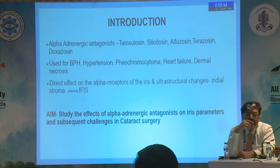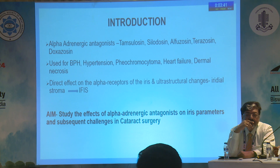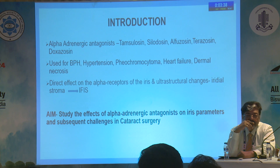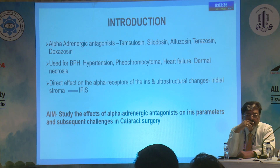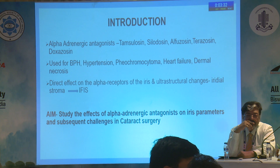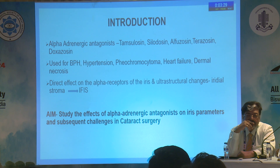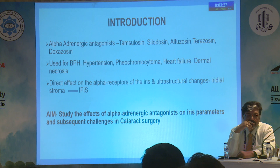Just the introduction — alpha adrenergic antagonists like Tamsulosin, Alpha Zosin, and Tera Zosin have been used for a variety of medical conditions, which include BPH, hypertension, and dermal necrosis. They have a direct effect on the alpha receptors of the iris, causing ultra-structural changes in the iris stroma, and it leads to IFIS.